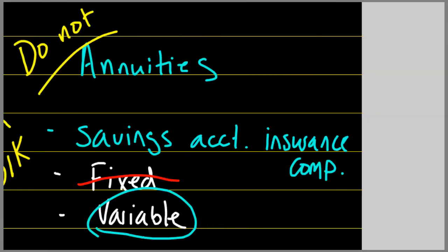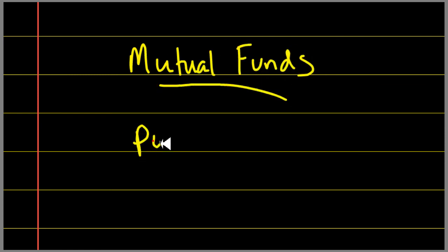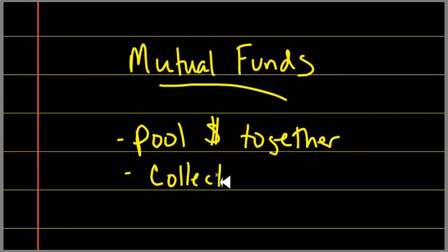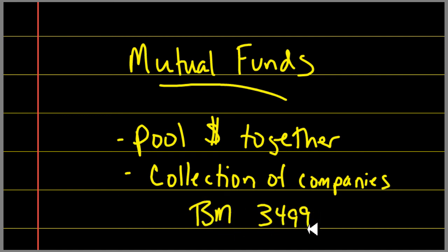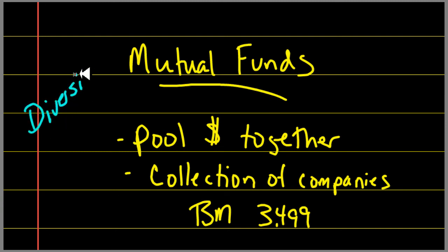Last ones we want to cover are mutual funds. Mutual funds are where people pool their money together, and they buy a collection of companies. Now this collection of companies really can have a lot. We noticed with the total stock market that we had in the total stock market 3,499 different companies in there. That's quite a bit. And so that really helps us to spread out or diversify. So diversify, spread out, that's a key word that we're going to be talking about on the test. And mutual funds really allow us to do it.